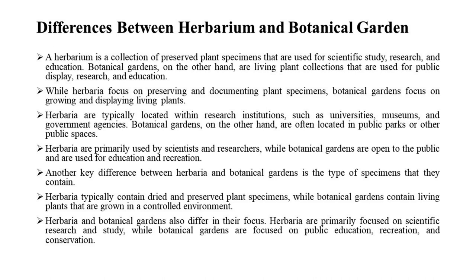A herbarium is a collection of preserved plant specimens used for scientific study, research, and education. Botanical gardens, on the other hand, are living plant collections used for public display, research, and education. While herbaria focus on preserving and documenting plant specimens, botanical gardens focus on growing and displaying living plants.